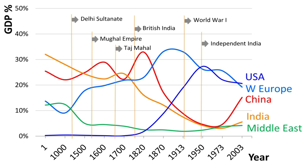The world economy was predicted to shrink by between 0.5% and 1.0% in 2009, the first global contraction in 60 years. In its forecast, the International Monetary Fund said that developed countries will suffer a more deep recession.